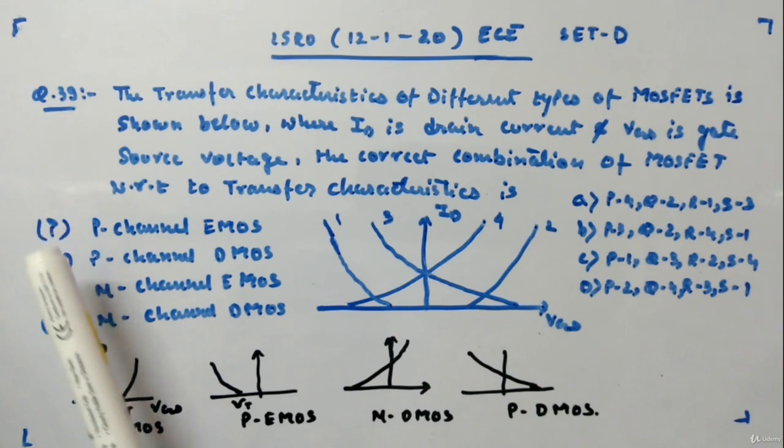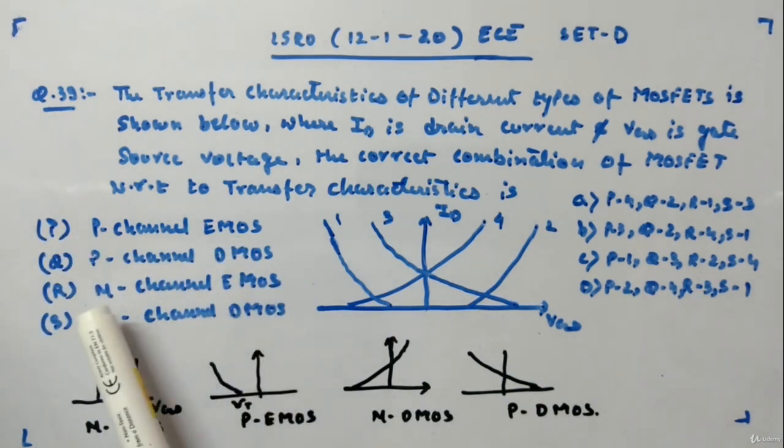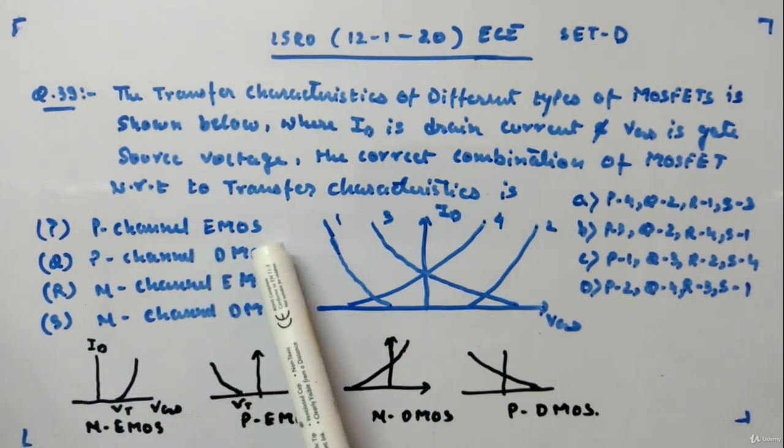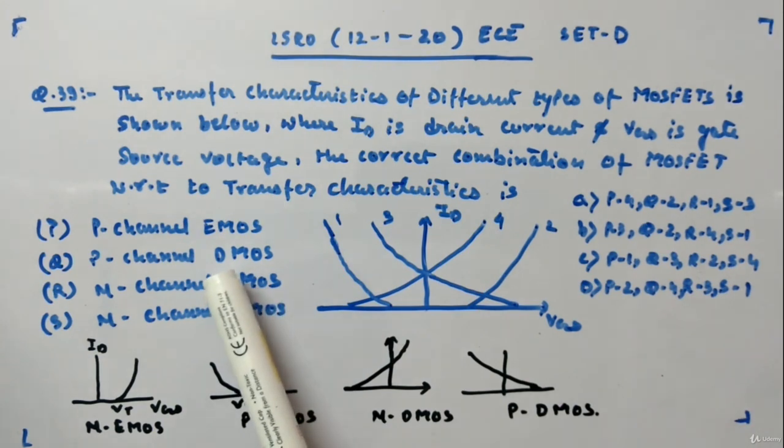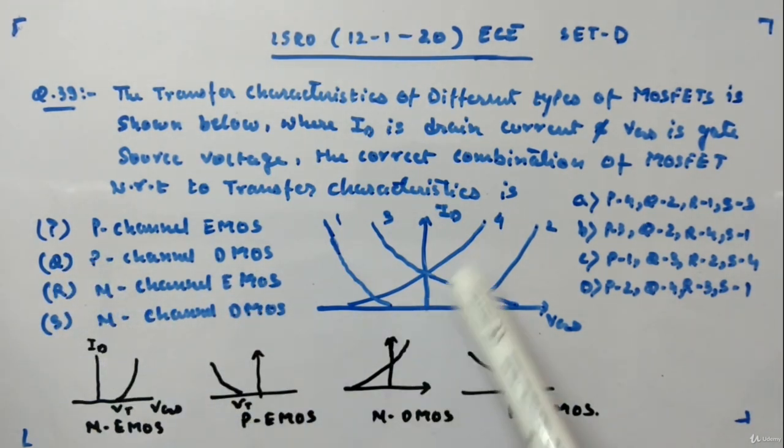Given the PQRS are: P channel EMOS, P channel DMOS, N channel EMOS, N channel DMOS. EMOS means enhancement MOSFET, DMOS means depletion MOSFET. Okay, P channel, P channel, N channel, N channel. This curve is given.